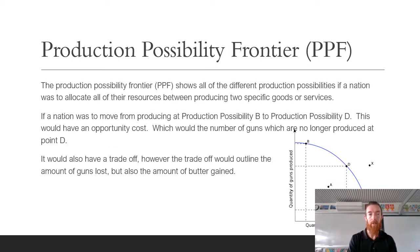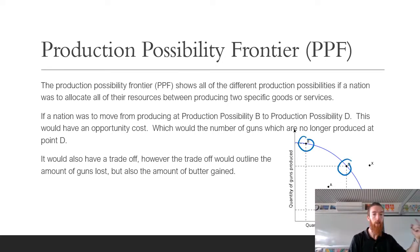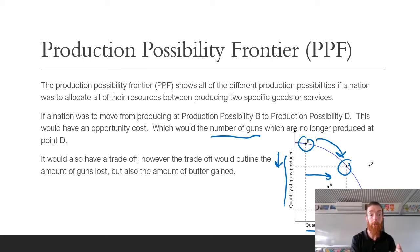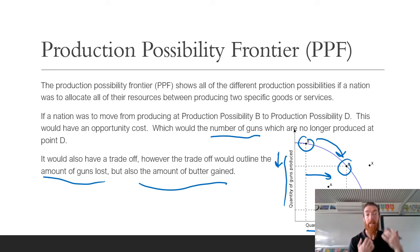The PPF shows all the different production possibilities. If a nation moves from producing at point B to point D, this would have an opportunity cost. On one axis we've got quantity of guns produced, and on the other axis quantity of butter produced. Moving from point B to point D means we are producing less guns to produce more butter. The opportunity cost is the number of guns no longer produced at point D. The trade-off would outline both the amount of guns lost and the amount of butter gained in return — that is the trade-off.